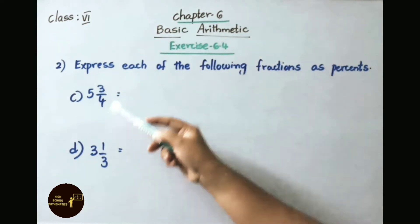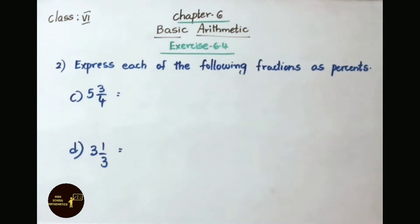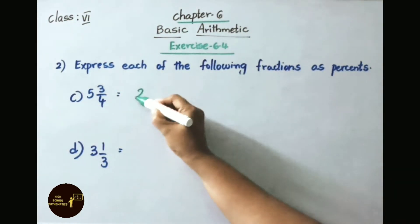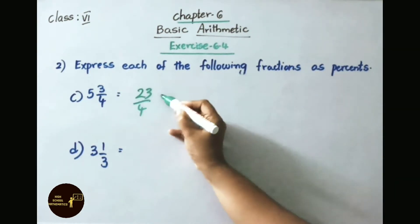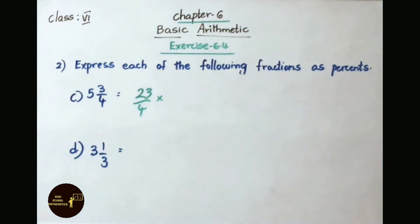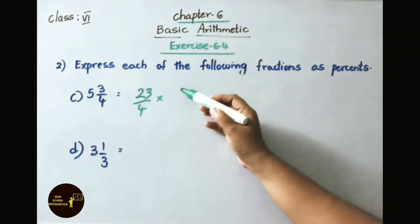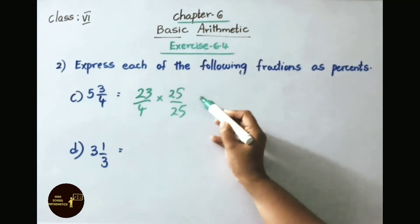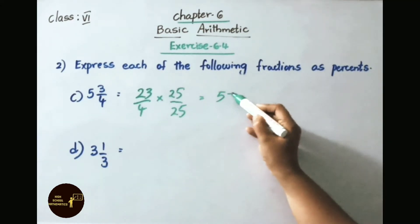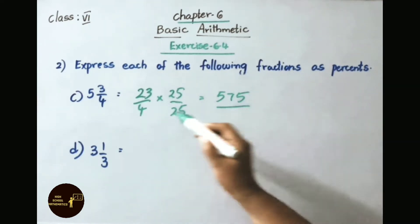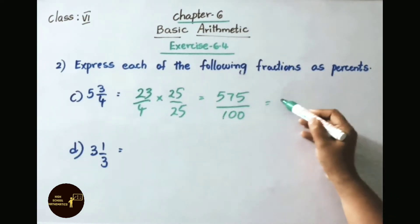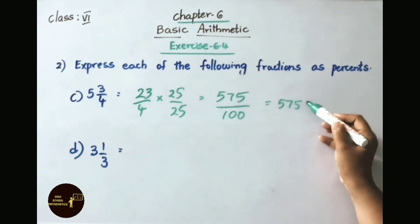Question C: 5 and 3 by 4. Convert the mixed fraction to an improper fraction: 4 fives are 20, plus 3 equals 23. Write 23 by 4. To get the denominator as 100, multiply numerator and denominator by 25. 23 into 25 is 575, and 4 into 25 is 100. So 575 by 100 is 575 percent.